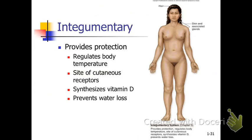Here's the integumentary system. It includes the hair, the skin, the nails, and the sweat glands. As far as what the system is doing: it's helping to protect us, regulating our body temperature, and it's the site of receptors for feeling, touch, and temperature. It's also where we make vitamin D.